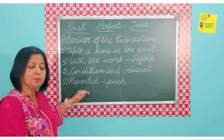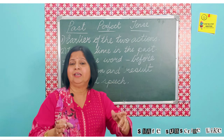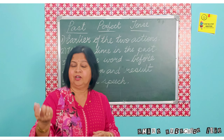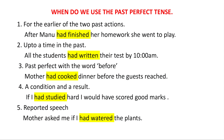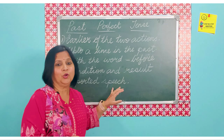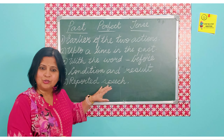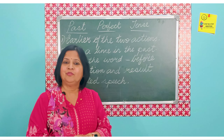We also use the past perfect in reported speech, which is nothing but indirect speech — direct and indirect. That's another topic we will cover in future classes. When someone has said something and you are reporting it, for example: 'mother asked me if I had watered the plant.' The watering should have been done before. So these are a few situations when we use the past perfect tense.